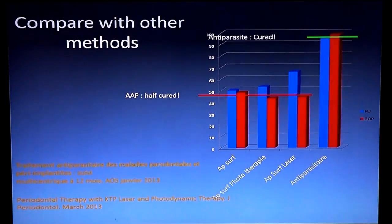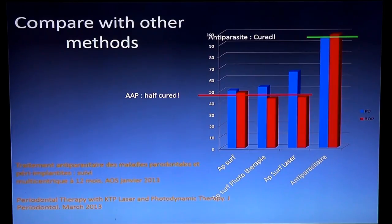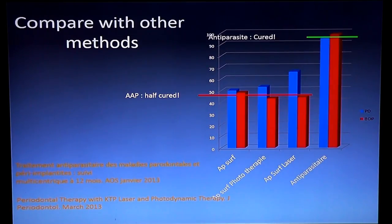Comparing our anti-parasitic method to other methods — surfacage, phototherapy, laser (laser is a little better) — see how incredible our results are. You can find this in the French journal Actualité Odonto-Stomatologique in 2013. See how the closing of pockets compares to surfacage. Deep scaling surfacage is only 50% cure — you still have 50% disease left. This is why root planing and surfacage is not really effective; it just leaves half the tooth disease. You have to remove those parasites if you want to cure the disease.